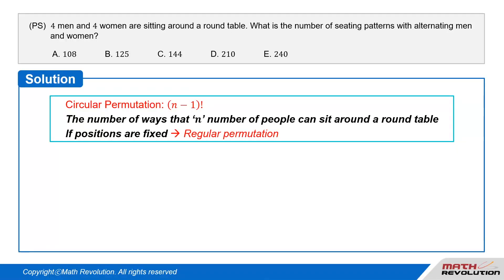Solution. Circular permutation. The number of ways that n number of people can sit around a round table is the factorial of n minus 1. But if their positions get fixed, the circular permutation becomes a regular permutation.